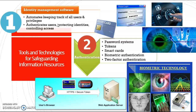Number two is about authentication. We have five items here. The first one is the password system. The system has limitations on the characters they want you to include in the password.